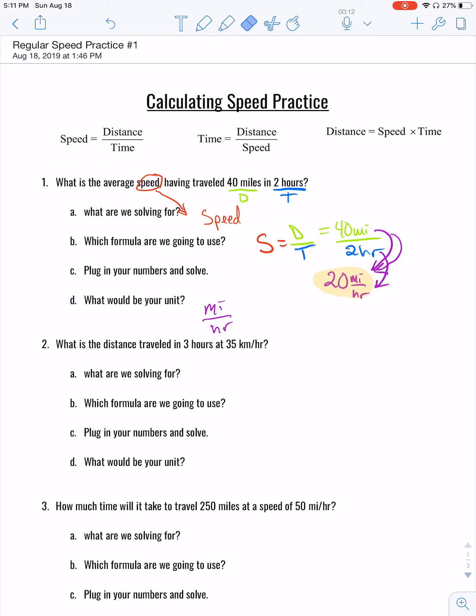Number two: what is the distance traveled in three hours, that's going to be our time, and 35 kilometers per hour which is going to be speed. What are we solving for? It's going to be distance. And then which formula will we use? The distance formula is up here. I'm going to bring it down: D equals S times T.